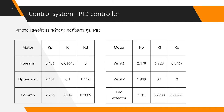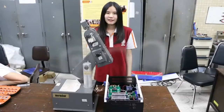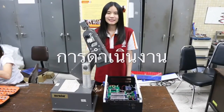After we obtain the PID parameters, before applying them, we need to run a simulation through the MATLAB program to verify whether the PID tuning is correct. After the simulation, the PID values that have been confirmed will be used as the final PID parameters.